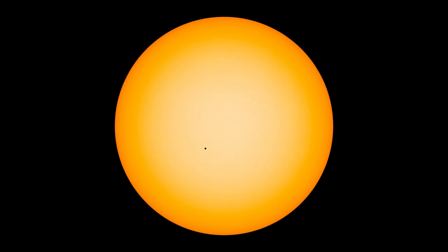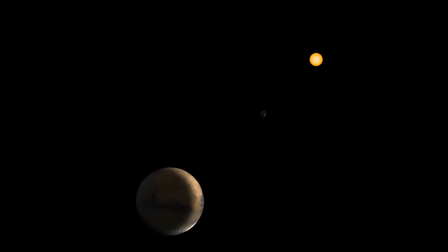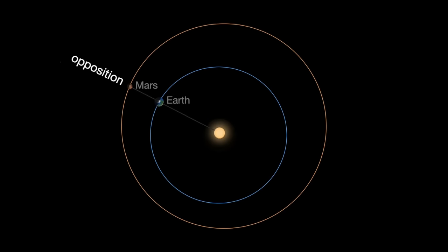Venturing beyond our home planet, and its solar companion, the sun, we set our sights on Mars, our enigmatic red neighbor. Mars, at its closest approach to Earth, is about 54.6 million kilometers away.